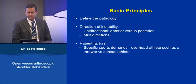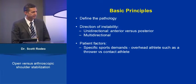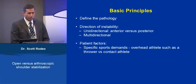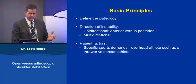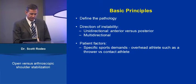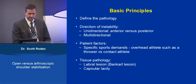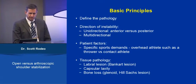Patient factors are critical. Think about the sports demands of that athlete. Is this an athlete involved in overhead activities such as throwing or tennis, or is this a contact athlete such as football or soccer? And then lastly, the tissue pathology — is there a labral lesion? What is the status of the capsule?